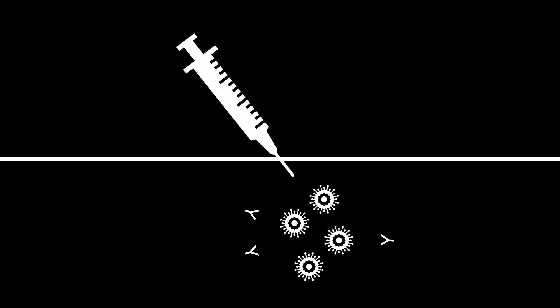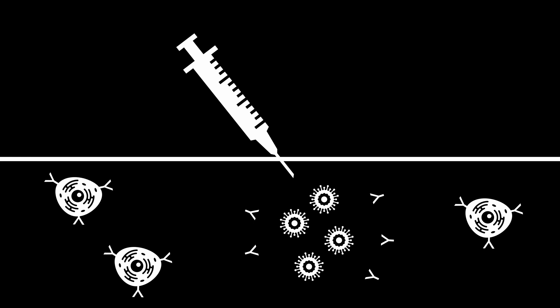T and B lymphocytes will take note of the specific antigen and prime the immune system to produce more cells and antibodies.